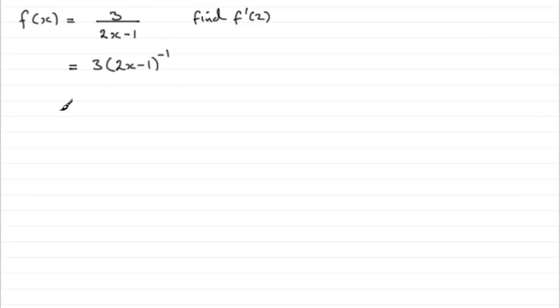Now to differentiate something like this, therefore f dash of x, I would need to use the chain rule. Remember the chain rule? This is where I'd let t equal 2x minus 1.